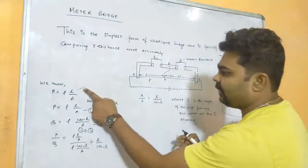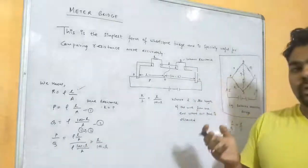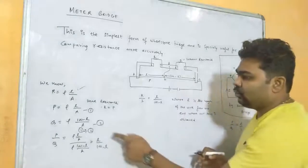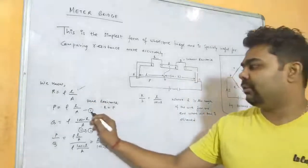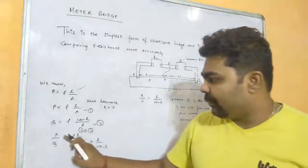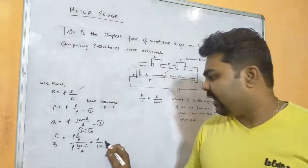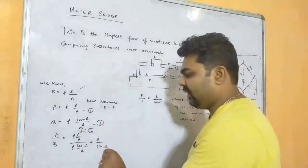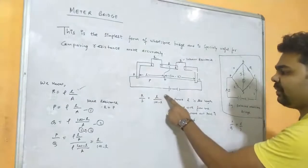In place of l for Q, we substitute (100 - l). The area of cross-section remains the same since it is the same one-meter wire divided into two parts. Dividing equation one by equation two, everything cancels and we get P/Q = l/(100 - l). Since P/Q = R/S, we get R/S = l/(100 - l).